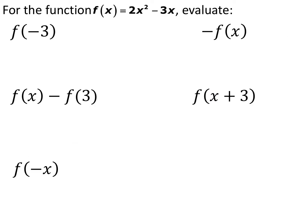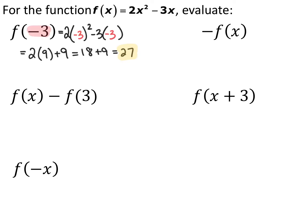If we have the function f of x equals 2x squared minus 3x, we have a bunch of different things to evaluate. For the first one, f of negative 3: anytime you have something inside the parentheses, it means we want to replace every x in the original function with that value and simplify as far as you can. Parentheses are your best friend — whenever you're substituting, always use parentheses, especially if there's a fraction or a negative.